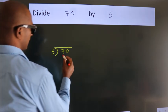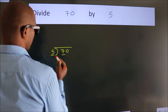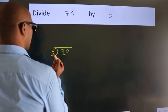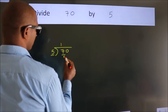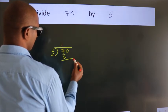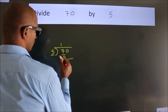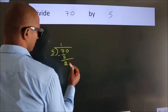Here we have 7. Here 5. A number close to 7 in the 5 table is 5 once 5. Now we should subtract. We get 2.